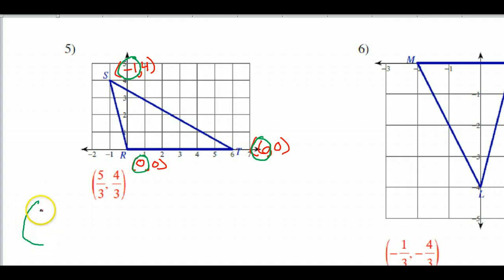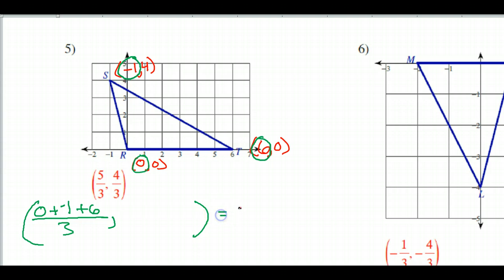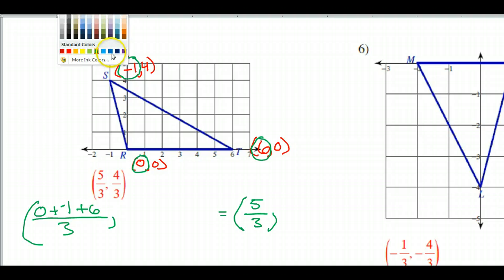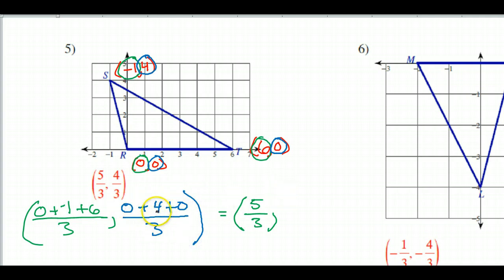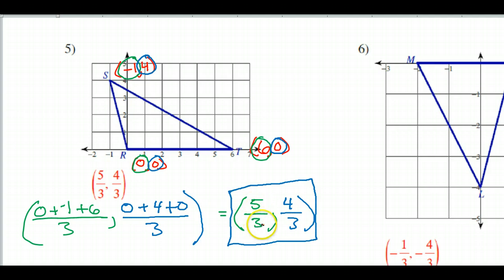Let's do the same thing one more time. The x-values are 0, -1, and 6. So: (0 + (-1) + 6) / 3 = 5 / 3. For the y-values — 0, 4, and 0 — we get: (0 + 4 + 0) / 3 = 4 / 3. So the centroid is (5/3, 4/3). Please do not make decimals — just leave the fractions as fractions.